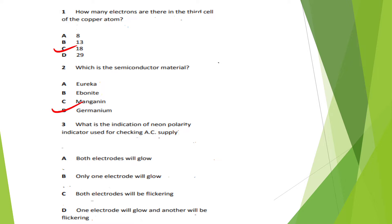Question 3: What is the indication of a neon polarity indicator used for checking AC supply? Options: Both electrodes will glow, only one electrode will glow, both electrodes will be flickering, only one electron will glow and another will be flickering. The answer is Option A — both electrodes will glow.